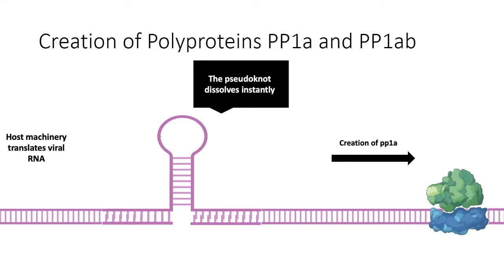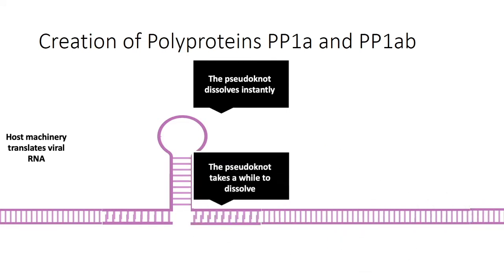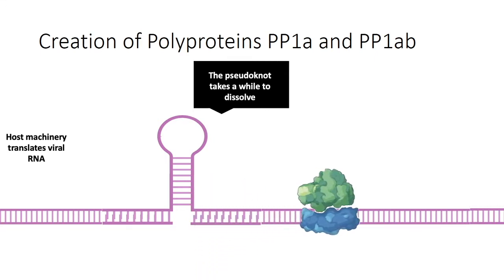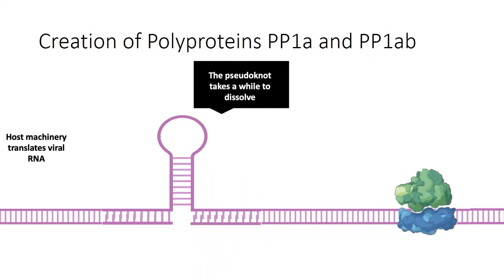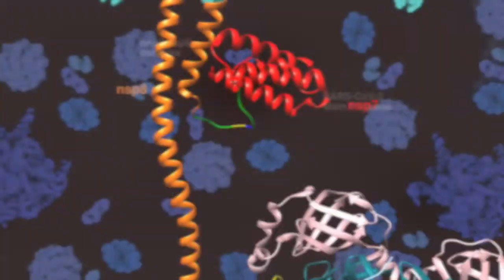Occasionally, the ribosome is not able to melt the structure directly. This causes it to move back one position in translation, causing replication site 1b to be expressed as well. This results in the creation of PP1ab.